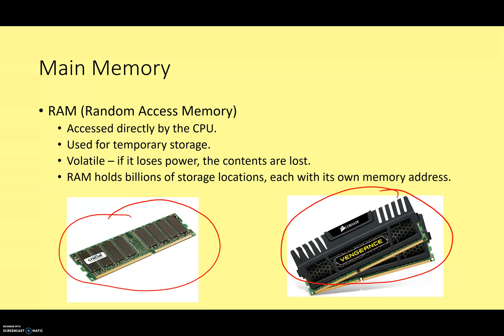RAM is directly accessed by the CPU and it's used for temporary storage — and it can only be temporary because RAM is volatile. That means if it loses power, the contents are lost. You've probably encountered that: you're working on your assignment, the computer freezes or crashes, it gets turned off, and when you turn it back on, you've lost whatever you were working on. If you haven't saved to secondary storage, it's gone, because when there's no power, you lose the contents of the RAM.